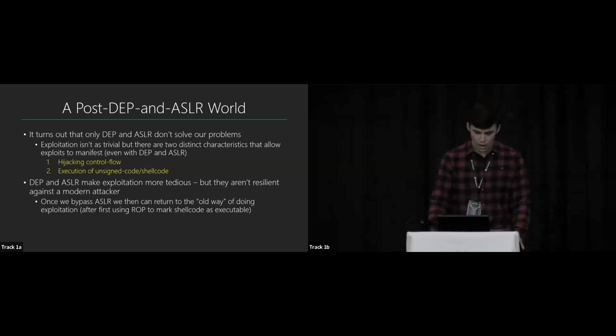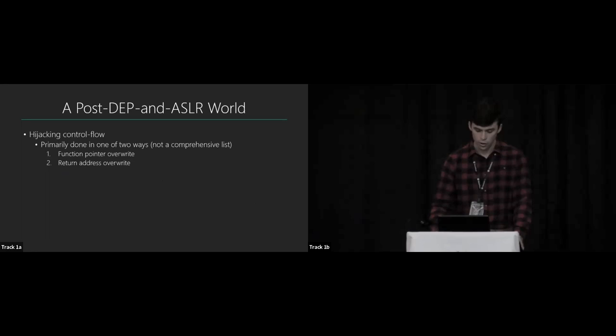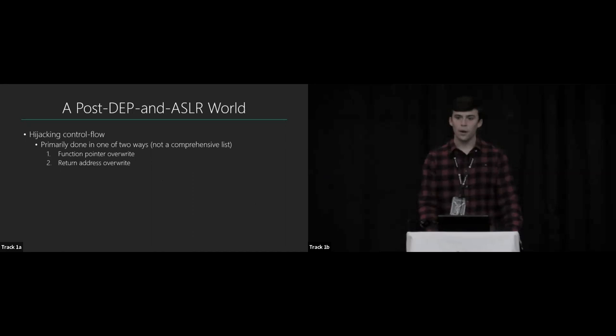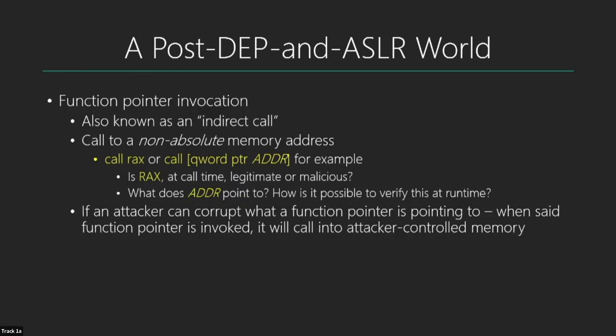Hijacking control flow is done primarily in two ways: overriding a function pointer, and overriding a return address. A function pointer, also known as an indirect call, is a call into a non-absolute memory address — either a call through a register or a call through a pointer. The issue is we don't know what's in RAX when the call happens, or what's on the other side of that pointer. The OS will just execute the function pointer without checking whether it's legitimate.